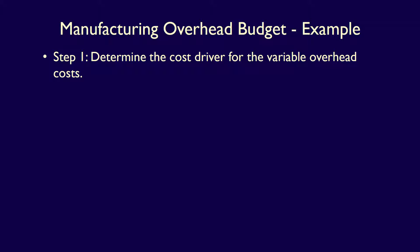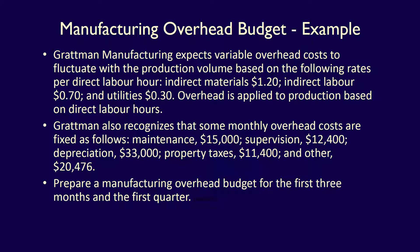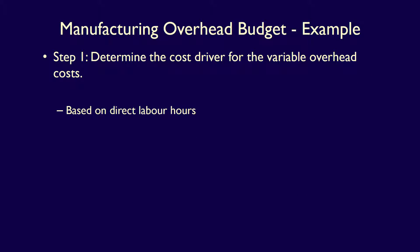Step one is to determine the cost driver for the variable overhead costs. The cost driver is the independent variable which causes the variable cost to change. As the independent variable increases, the variable costs increase, and as the independent variable decreases, the variable costs decrease. The cost driver can be machine hours, direct labour hours, direct labour costs, or the number of units produced. Gratman Manufacturing expects variable overhead costs to fluctuate with production volume based on rates per direct labour hour, and overhead is applied to production based on direct labour hours. So we know we need to use direct labour hours as the cost driver.